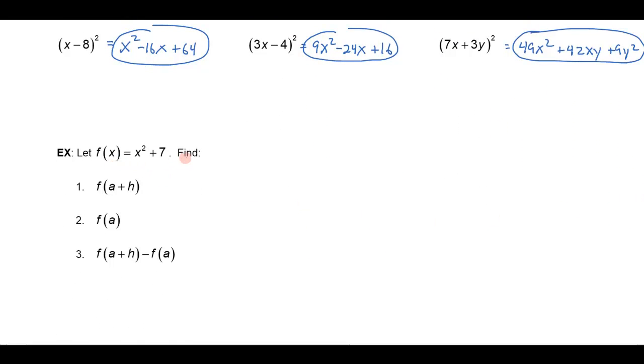One last example here. Here's a function f of x equals x squared plus 7. Suppose I wanted to find f of a plus h. Now, you remember f of a plus h means the output for the function when the input's a plus h. So I have to replace the x up here with a plus h. That's going to give me a plus h squared plus 7. So you can see why I'm doing this example in the context of squaring the binomials, because I end up squaring this binomial, so that's going to give me a squared, and then a times h is just ah, doubled would be 2ah, and then I have to square the h, and then finally add the 7.